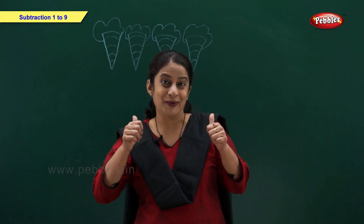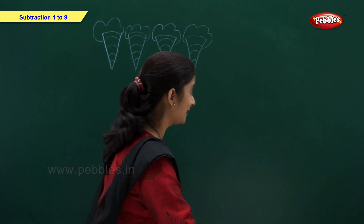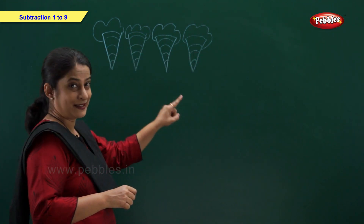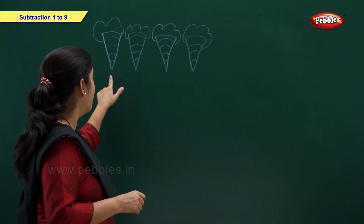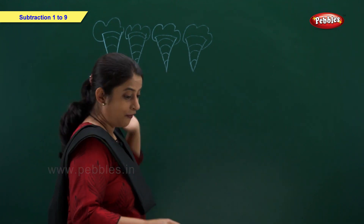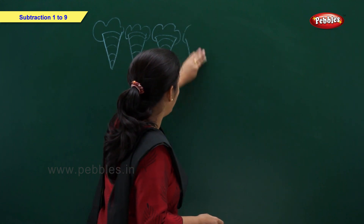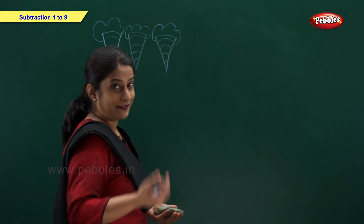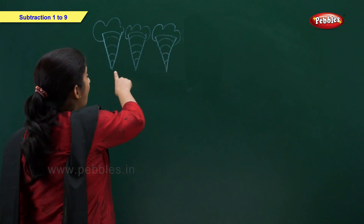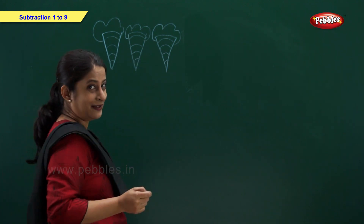It's time to eat ice creams! I have 4 ice creams: 1, 2, 3, 4. I ate 1 ice cream. So how many left? 1, 2, 3.